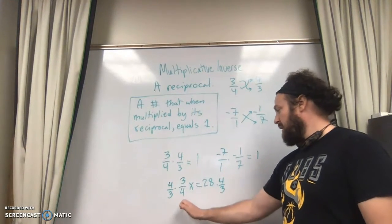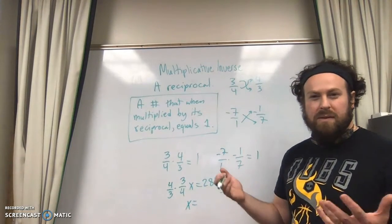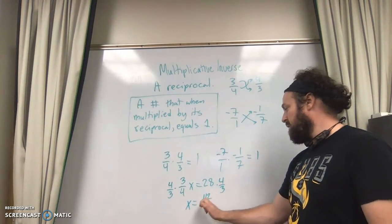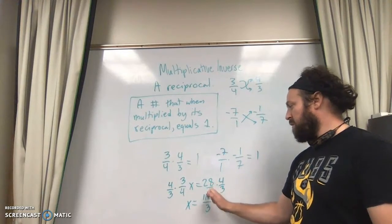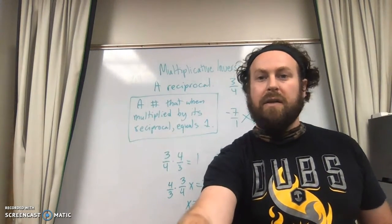1 and 1, I get 1x. 28 times 4 over 3, what was it? 112 over 3. Don't forget about the 1 in the denominator. That's it. We'll keep going from here and look at another inverse in just a moment.